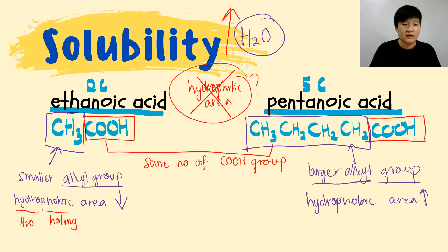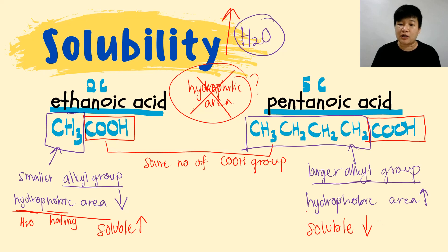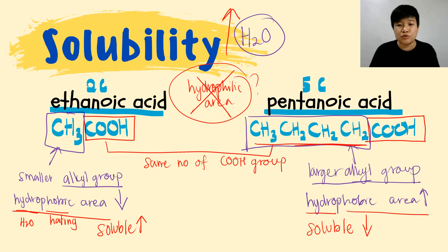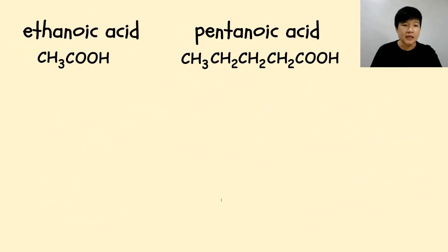Since we want a smaller hydrophobic area for higher solubility, ethanoic acid will definitely be more soluble than pentanoic acid. Pentanoic acid's solubility decreases because the area that dislikes water is too large — it moves far from water because the hydrophobic area is very big.